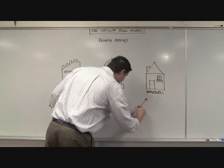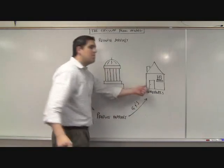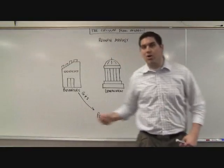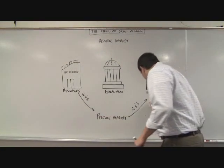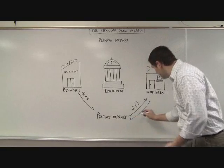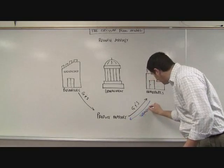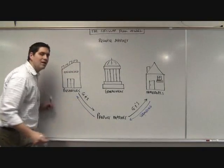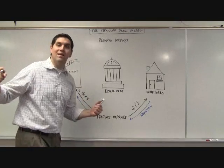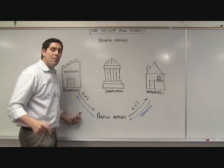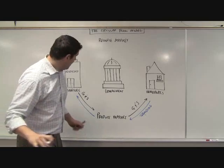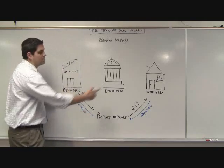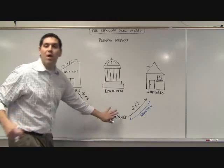These goods and services make their way over to individuals. We buy the stuff. But we can't just walk in the store and grab it — we have to give them something. Individuals need to give money; this is spending by individuals in the product market. That money coming in to the firm is not called profit — it's called revenue. Revenue coming in to these firms from people buying their stuff.